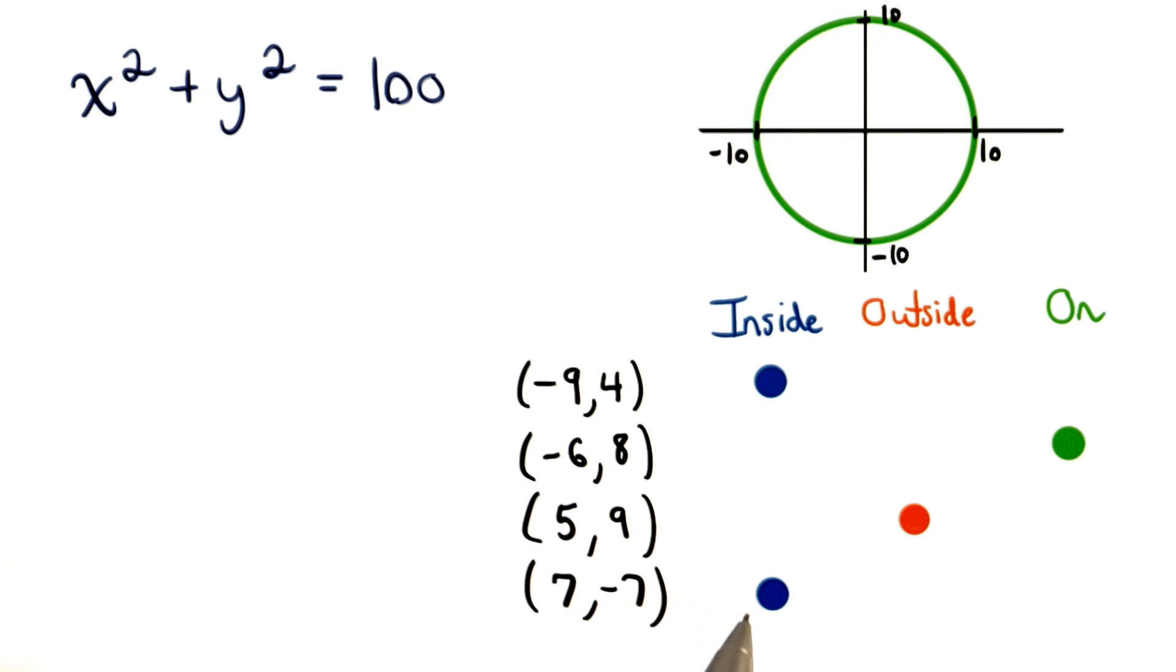These two points are inside the circle. This point is on the circle, and this point is outside the circle. Great work if you got all four of them correct. Now, if you weren't sure where to start, let's look at this first point and see why it's on the circle. Then you might be able to figure out why these are inside, and this one's outside.